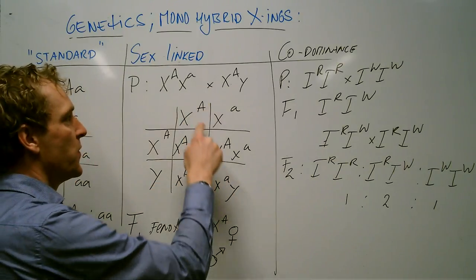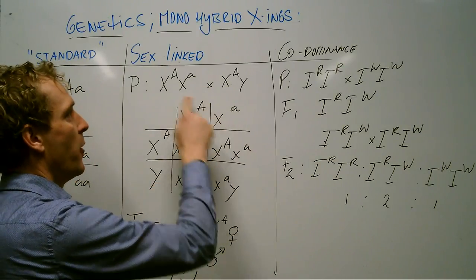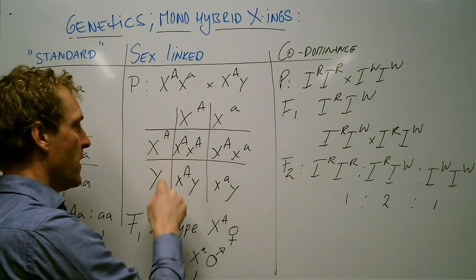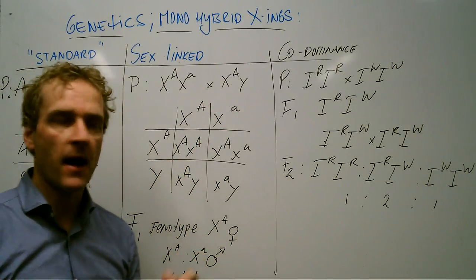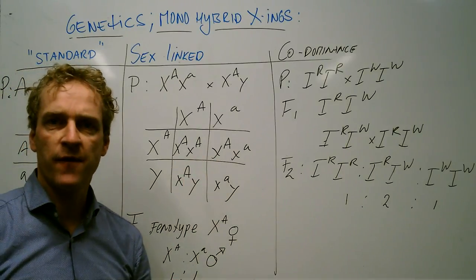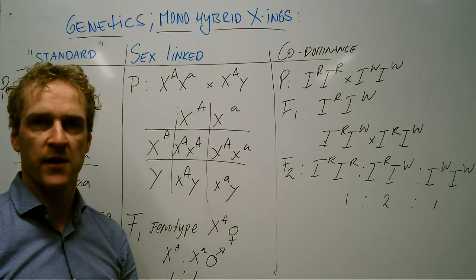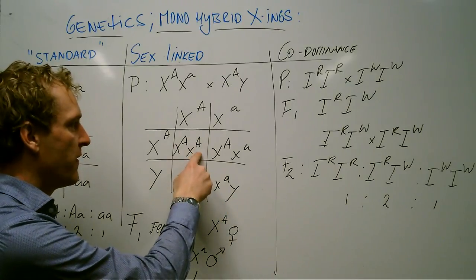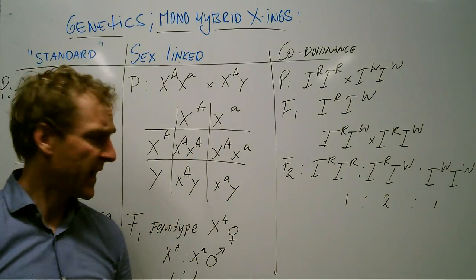If we cross these two individuals you can see I put the lady on top here and my guy on the left hand side and I can see four individuals, four different individuals concerning this trait. We have a girl that can see color.